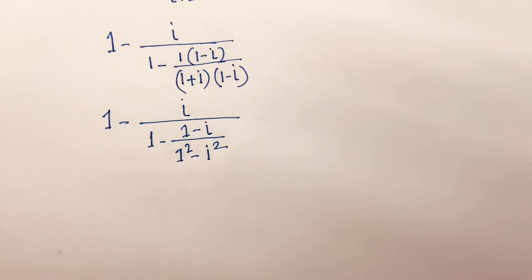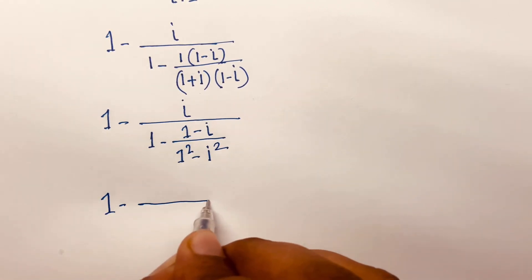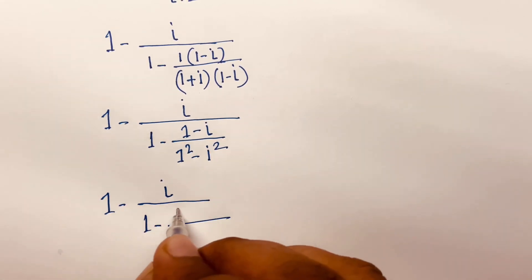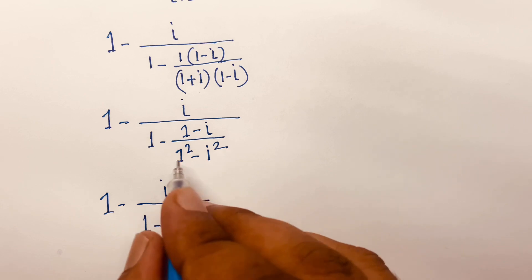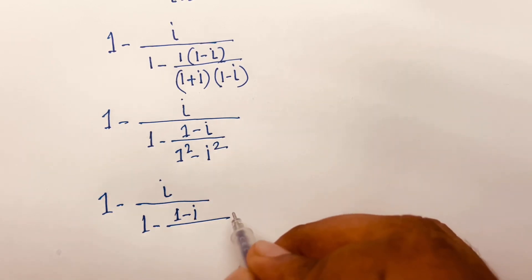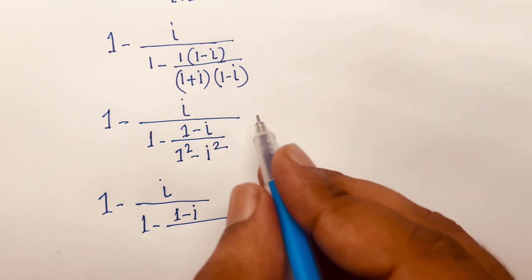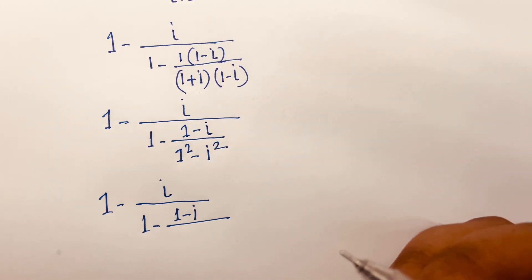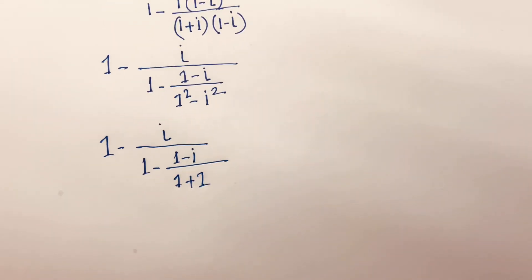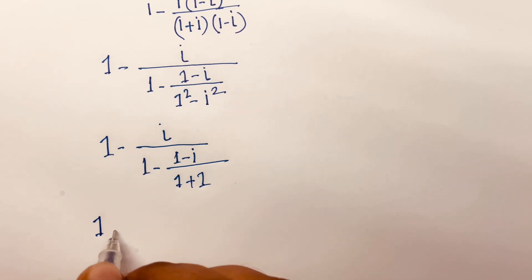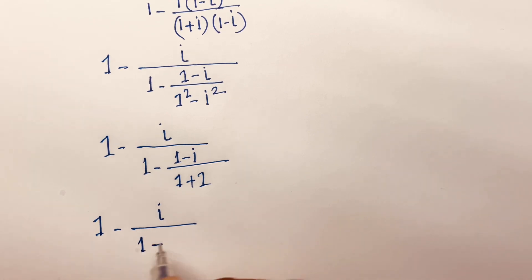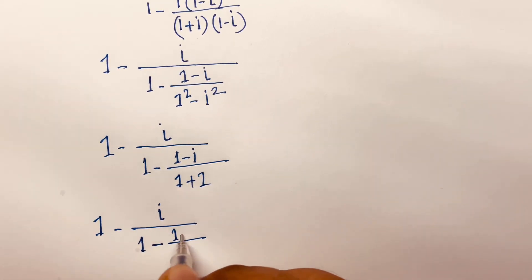Then this equation becomes (1 minus i) squared, and the denominator will be 1 squared minus i squared. We know that i equals square root of minus 1, so i squared equals minus 1. Minus 1 times minus gives plus, so I can say it will be 1 plus 1. Then I can say (1 minus i) over (1 minus (minus i)), giving 1 plus 1.